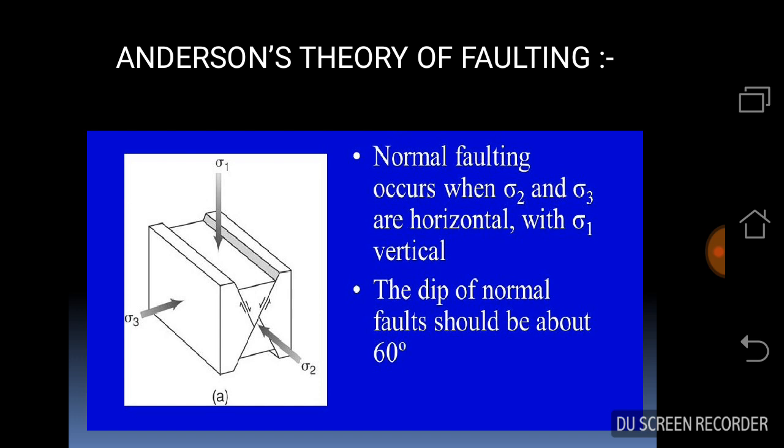Anderson showed that the three major classes of fault result from the three principal classes of inequality that may exist between the principal stresses. The theory, though, only relates the orientation of faults to the stress field that existed at the time of formation, and it is usually not possible to prove the simultaneity of origin of the old faults discussed.